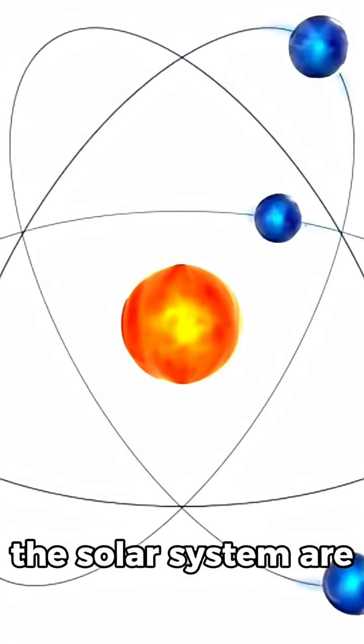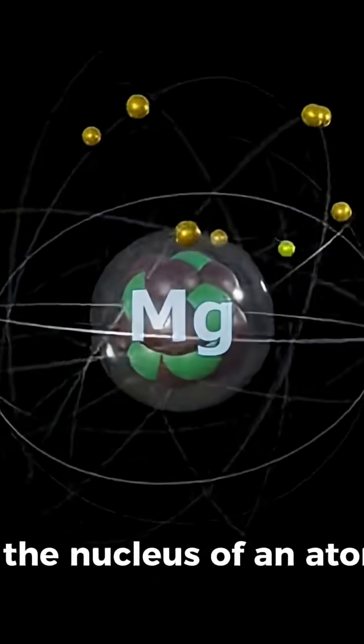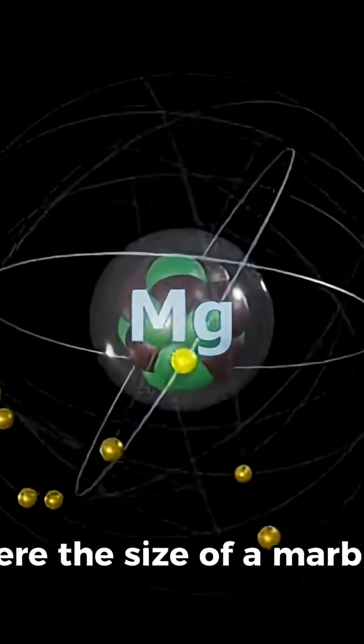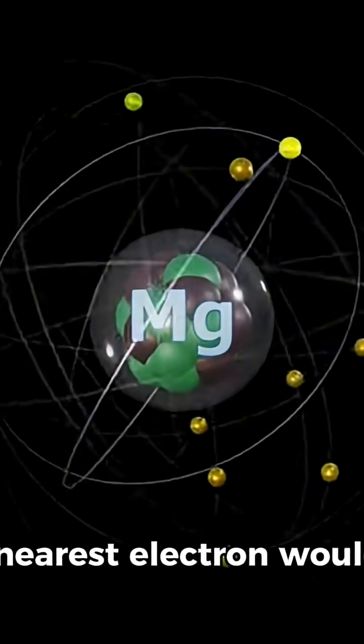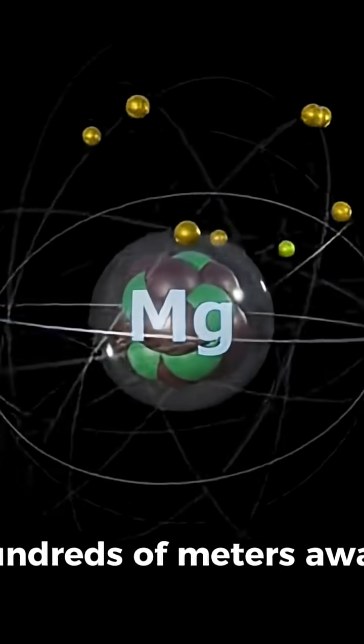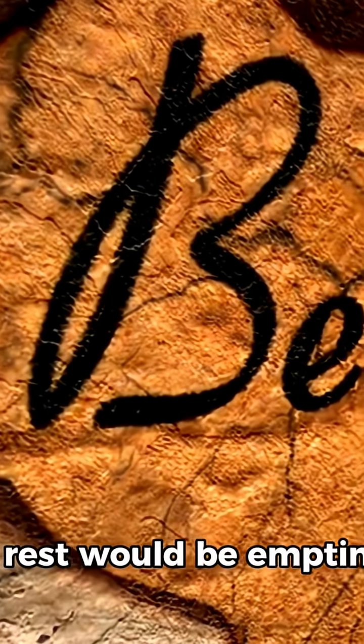Both the atom and the solar system are mostly empty space. If the nucleus of an atom were the size of a marble, the nearest electron would be hundreds of meters away. The rest would be emptiness. And yet, this emptiness is not nothing.